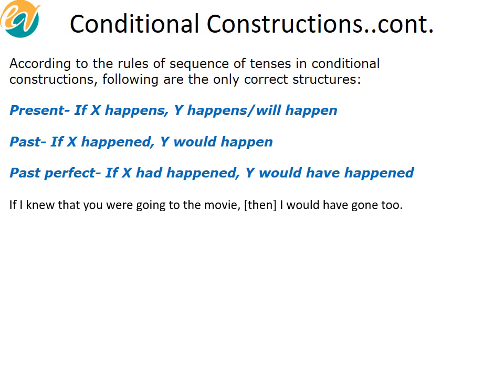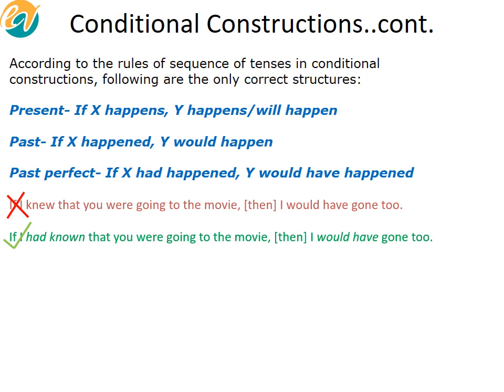How do we fix it? One way to fix it would be: 'If I had known' — now the entire sentence is consistent with the past perfect structure: 'If I had known, I would have gone to.' Or you could change the second portion: 'If I knew that you were going to the movie, I would go to.' Both would be consistent, but you can't have a mixed entourage.